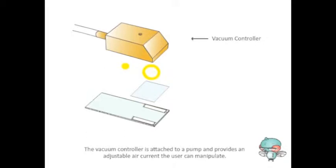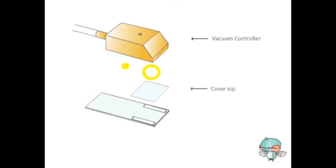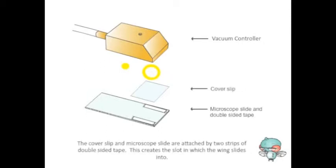The vacuum controller is attached to a pump and provides an adjustable air current the user can manipulate. The cover slip and microscope slide are attached by two strips of double-sided tape. This creates a slot in which the wing slides into.